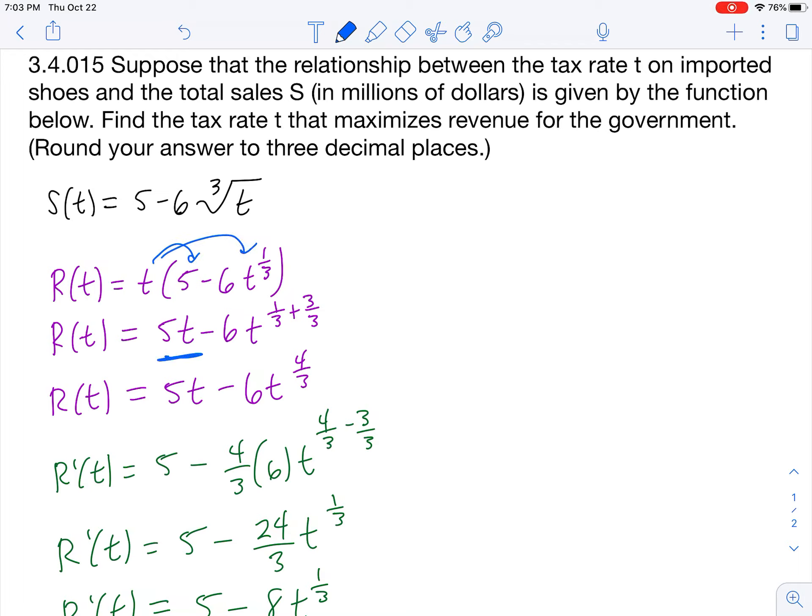t times 5 is 5t, and t times negative 6t to the one-third power. What we have to do is add the exponent, which is 1, for the t on the outside of the parentheses, to the exponent of one-third that's on the inside of the parentheses.